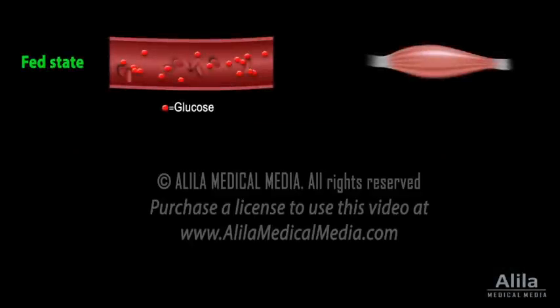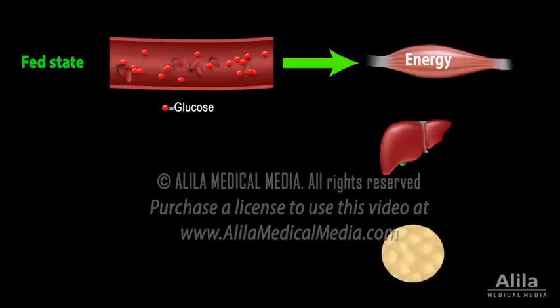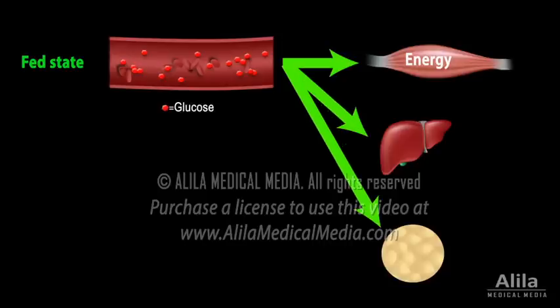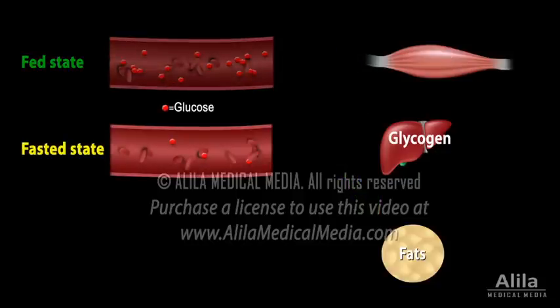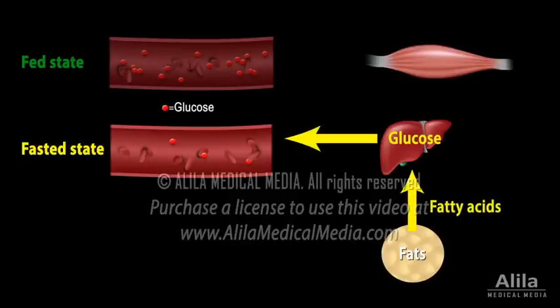In most tissues — muscles, for example — glucose is used as an energy source, while in the liver and adipose tissue it is also stored for later use, in the form of glycogen and fats. When the body is in the fasted state, the liver produces and secretes glucose into the blood, while adipose tissues release free fatty acids to the liver, where they are converted into additional metabolic fuel.